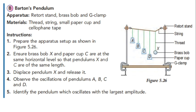Conclusion: Brass bob X is made to oscillate with maximum amplitude when energy is supplied at its own natural frequency. Resonance occurs when the natural frequency of a system corresponds to the frequency of the energy supplied.